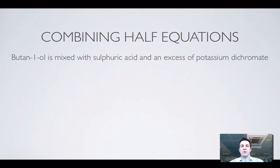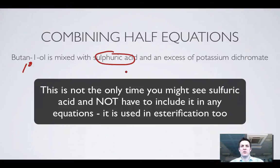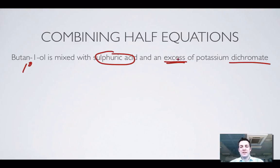Moving on to combining half equations. In this question we've got butan-1-ol, which is a primary alcohol. It's mixed with sulfuric acid — which can confuse people who wonder what alcohols do when reacted with acids — but dichromate ions only work in acidic conditions, so that's why the sulfuric acid is there; it's a bit of a red herring. And we've got an excess of potassium dichromate ions. That excess means that our alcohol is going to be oxidised as much as it can be — not to the aldehyde, but to the carboxylic acid.